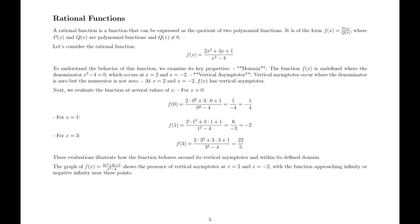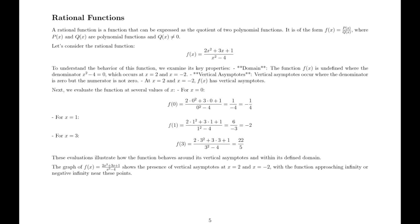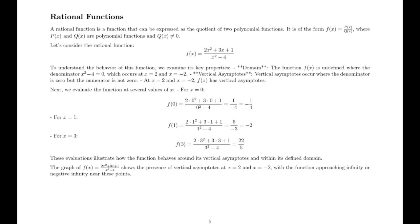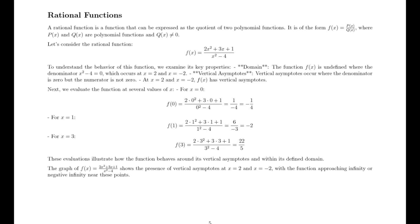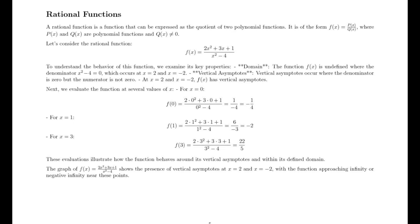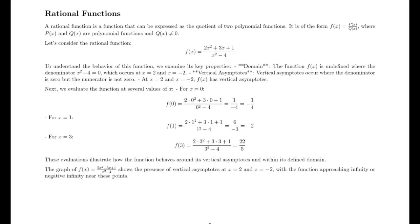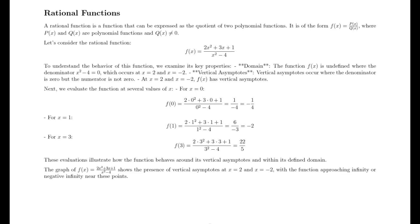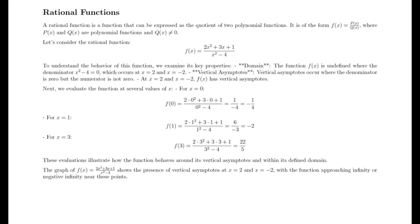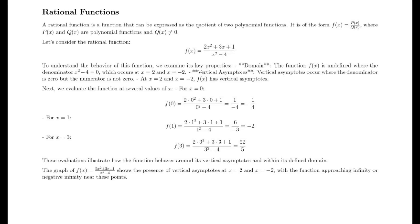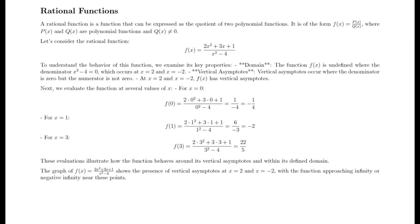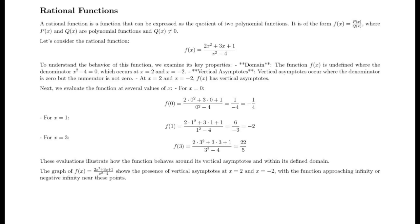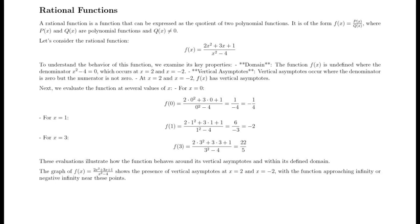Next, we evaluate the function at several values of x. For x = 0, f(0) = (2(0)² + 3(0) + 1) / (0² - 4), which is 1/(-4), or -1/4. For x = 1, f(1) = (2(1)² + 3(1) + 1) / (1² - 4), which is 6/(-3), or -2. For x = 3, f(3) = (2(3)² + 3(3) + 1) / (3² - 4), which is 22/5.